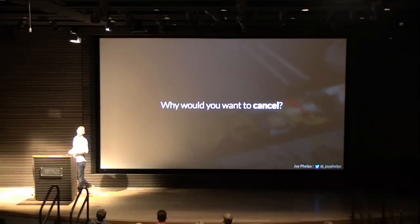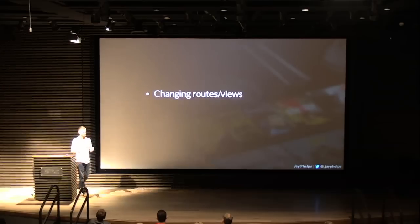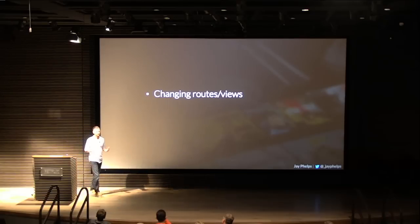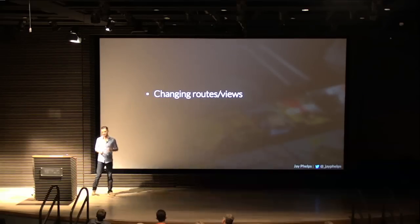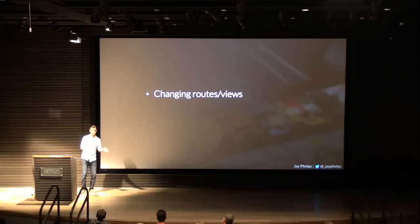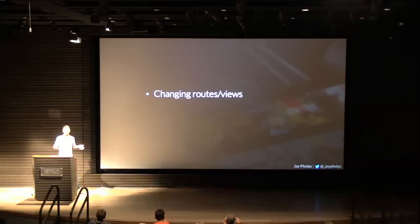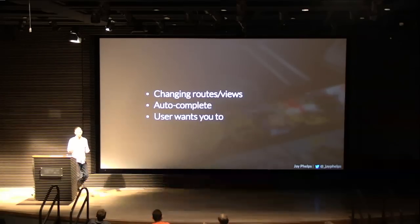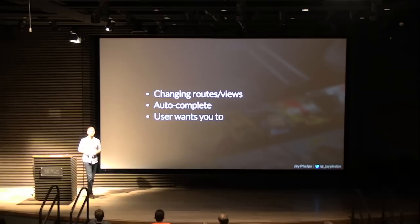In real-world applications, we quickly discovered two problems: the guaranteed future and the single value. Promises cannot be canceled. Why would you ever want to cancel a promise? There are lots of reasons. Changing routes or views — imagine you mount a component, and on componentDidMount you fire off an Ajax request. Before that request finishes, someone changes the route, hits the back button, goes somewhere else. You can't cancel that request, so you have to handle that somehow. There's also the autocomplete use case, or simply wanting a button to let the user cancel a request that's going out.